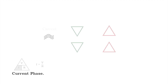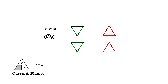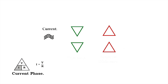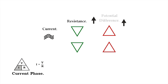The second phase of the formula is the phase of current. If current is constant — it is the variable that does not change — when resistance decreases or goes down, potential difference must also decrease or go down. When current is constant and resistance increases or goes up, potential difference must also increase or go up.